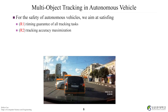Timing guarantees of all tracking tasks is very important. By 'all' I mean there are many cameras — let's say five cameras, each with different angles, all performing object tracking. The second requirement is tracking accuracy maximization. The DNN model's accuracy should be high so we can correctly identify objects in front. So these two requirements must be satisfied: R1 — timing guarantee of all tracking tasks, and R2 — tracking accuracy maximization.